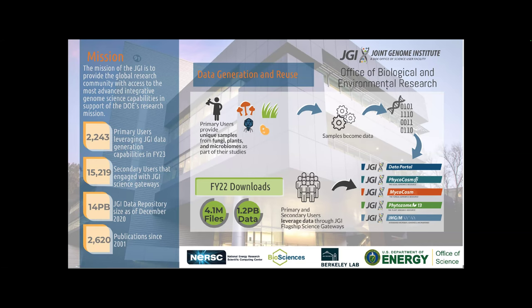As a user facility, our primary users are scientists around the globe who submit proposals and send unique samples from fungi, plants, and microbiomes. We sequence those samples — each one becomes data that we need to analyze. Results become available in our data portals for secondary users as well. Currently we have over 2,000 primary users, over 15,000 secondary users, and are generating more than 14 petabytes of data.